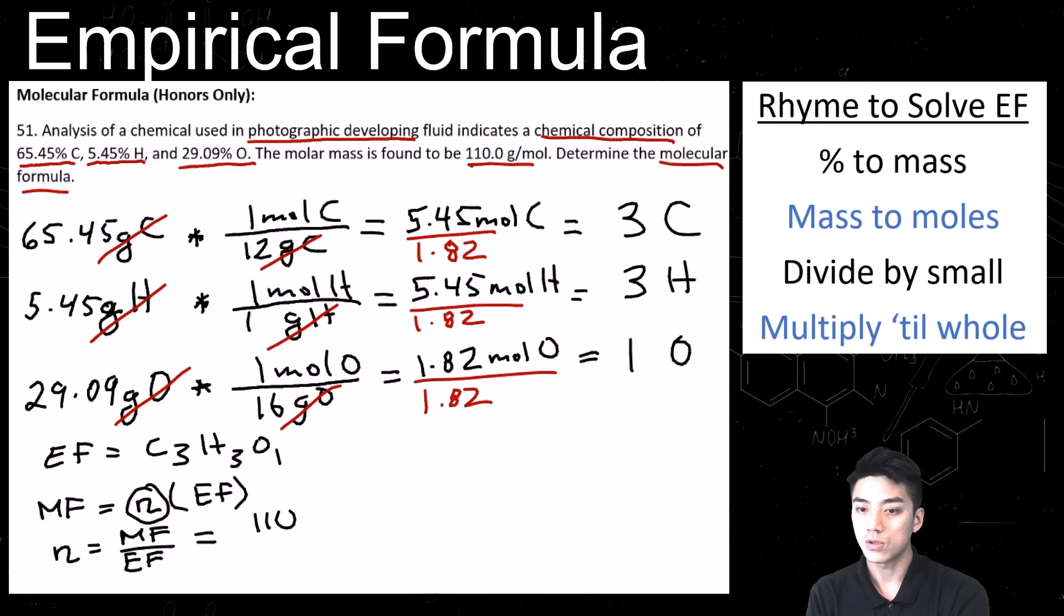So we were told earlier in the problem that the molecular mass of this compound was 110. The empirical formula, the empirical mass is 3 carbons, which weighs 36. Your hydrogens weigh 3 in total, and your 1 oxygen weighs 16. So you add that all up. The empirical mass is 55. So your ratio, N, will always be a whole number. And in this case, the whole number is 2.